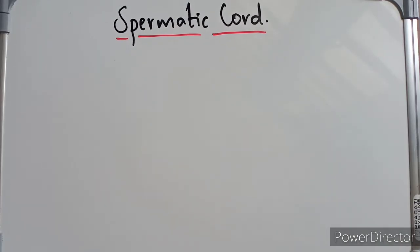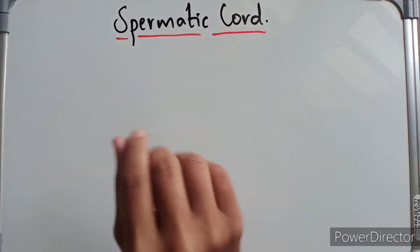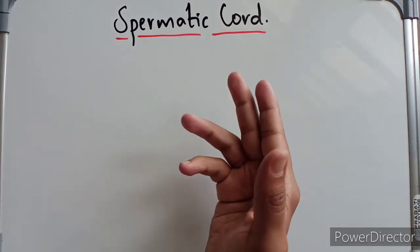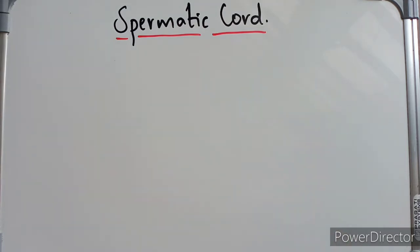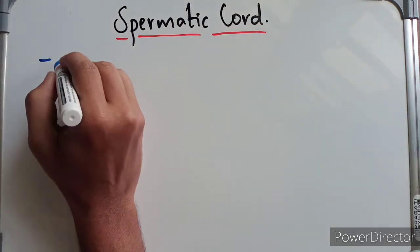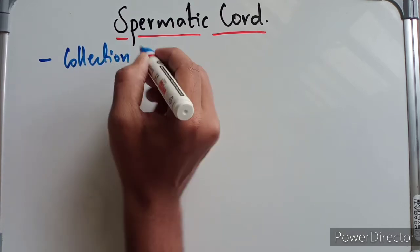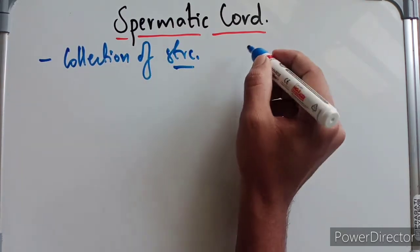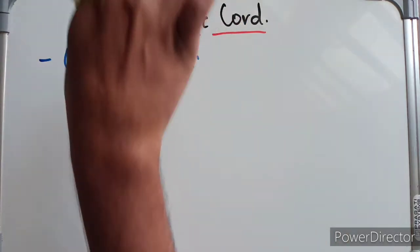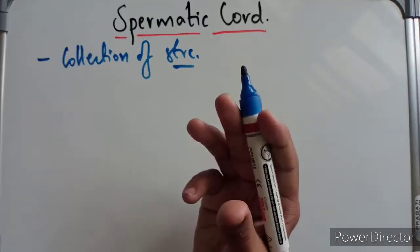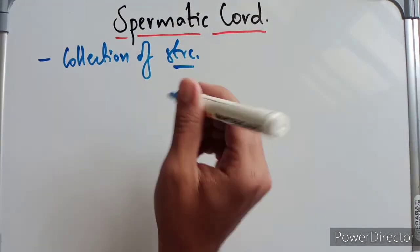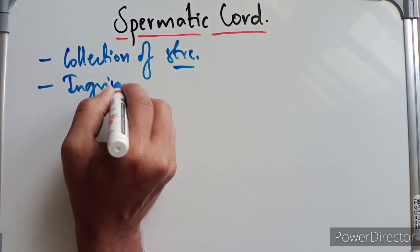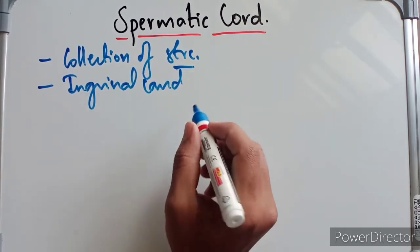Hello guys, welcome to my video. In this video we are going to look at the anatomy of the spermatic cord — its constituents or contents and what are the coverings of the spermatic cord. The spermatic cord is a collection of structures that pass to and fro from the testes, and the spermatic cord goes through the inguinal canal.